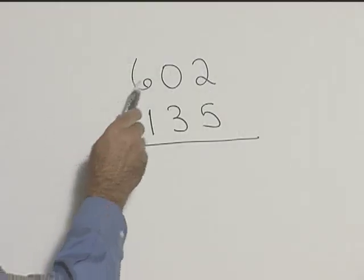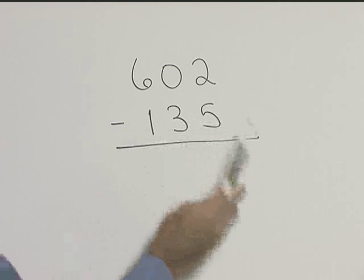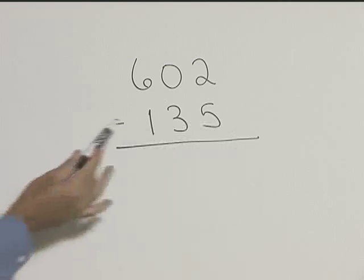Let's see what we know. We know the river is 602 feet wide, and the buoy is 135 feet away. So what we want to do is subtract.